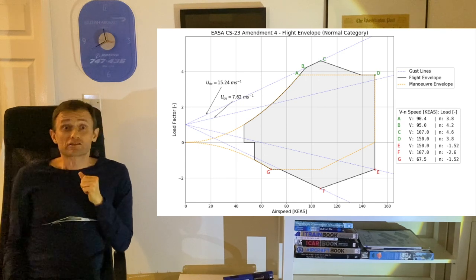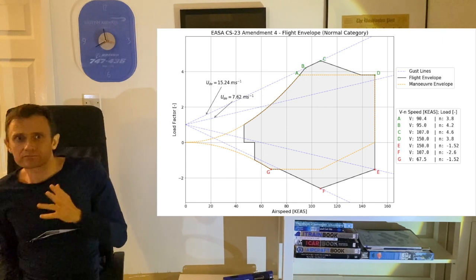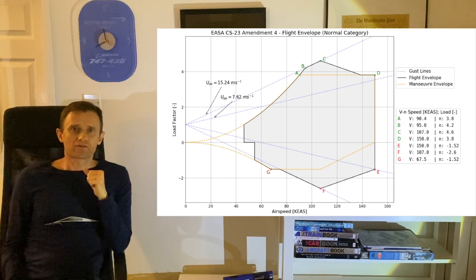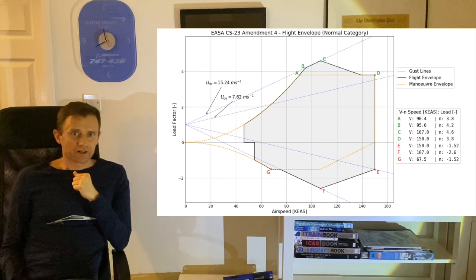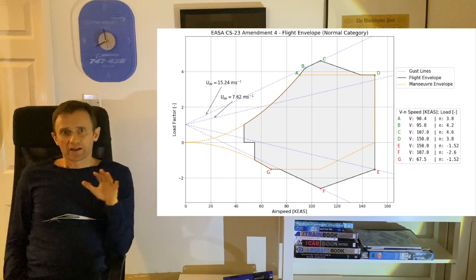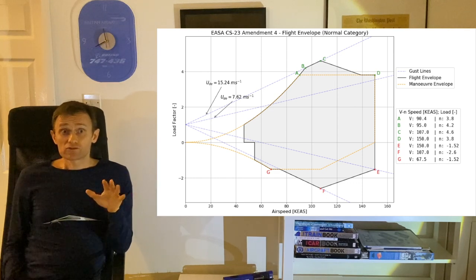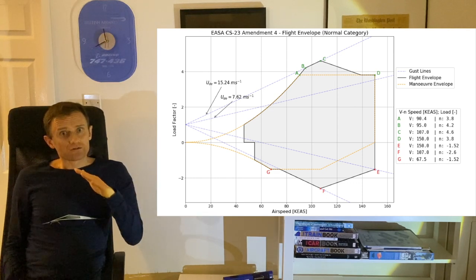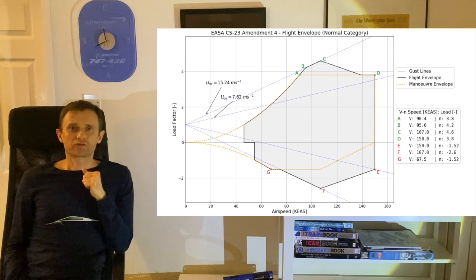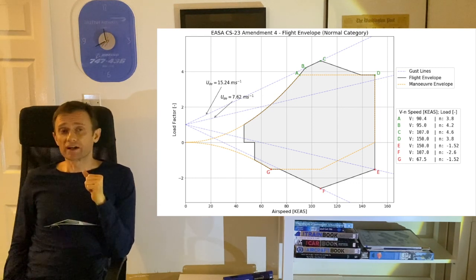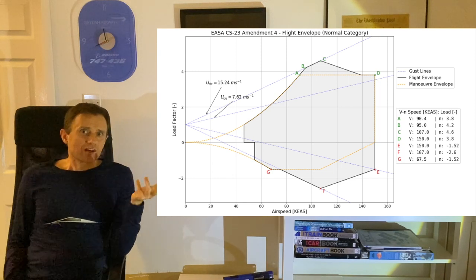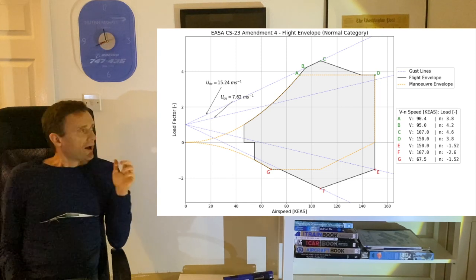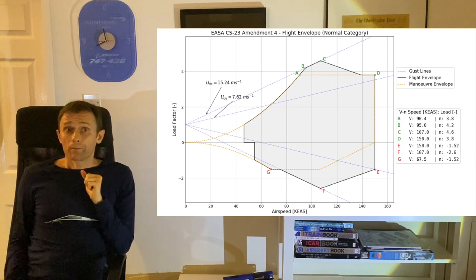Let us look at gust loads now. These are caused by rising or sinking columns of air which the aircraft might penetrate, with the result being a temporary increase or decrease respectively of the angle of attack, and thus the load factor. The gust-related load factor increases linearly with airspeed, which is why we see gust lines on the diagram emanating from the 0-1 point.